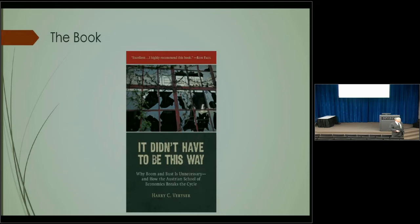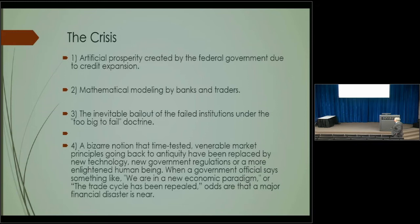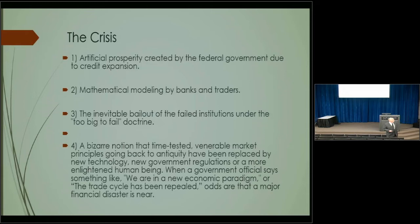When we talk about the crisis, it's artificially created and it's created by the expansion of bank credit. There are a number of explanations for the trade cycle. Remember, there are four trends in all of economics: seasonal trends, structural trends, frictional trends, and cyclical trends. What we're really looking at now is a cyclical trend.